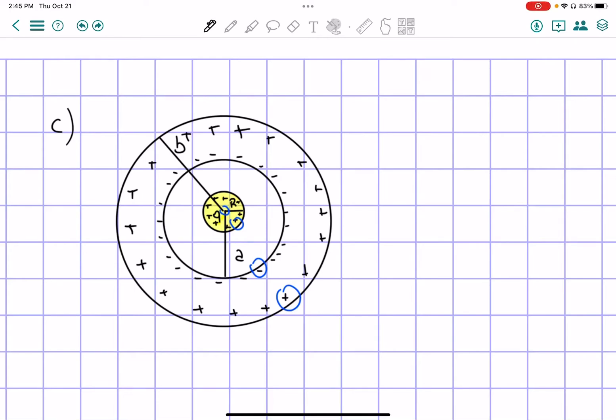Part C of this problem tells us that we have a wire connected to the outer shell that is taking all the positive charges away. But why the positive charges? Well, we know that the negative charges still want to go towards the center of the sphere. They don't want to run away. So why would they go along the wire?